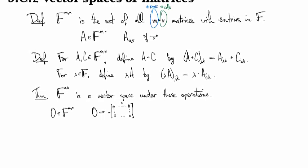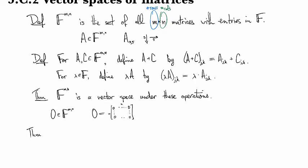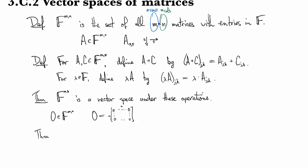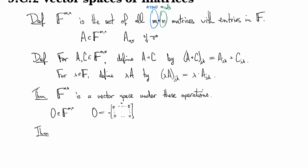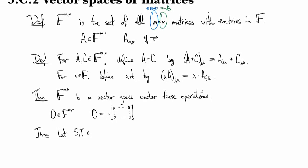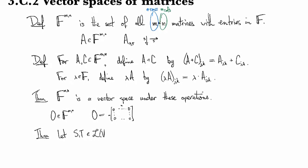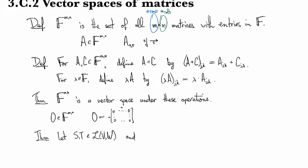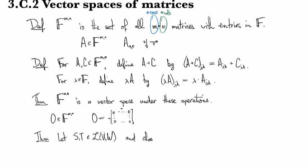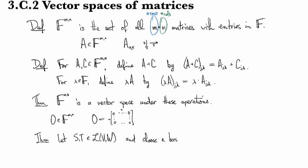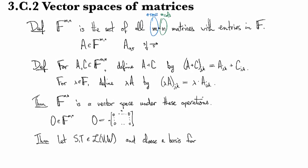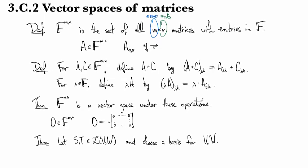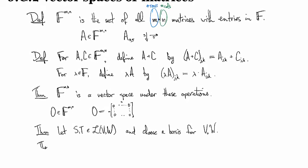Then we have another theorem. And so the book calls this one, well, actually it calls it a couple of things here. I'll number them by parts. So let's see. So suppose we have two linear maps from V to W, and we've fixed a basis for each of these guys.